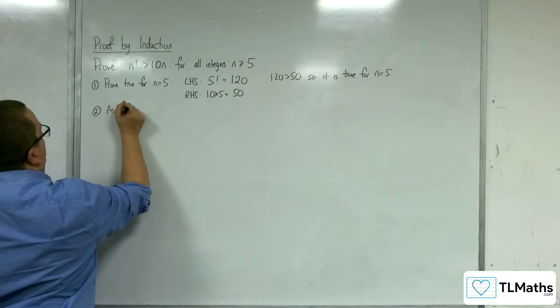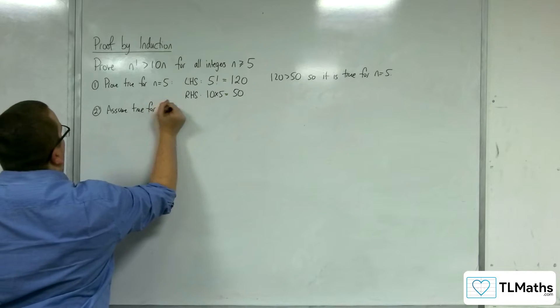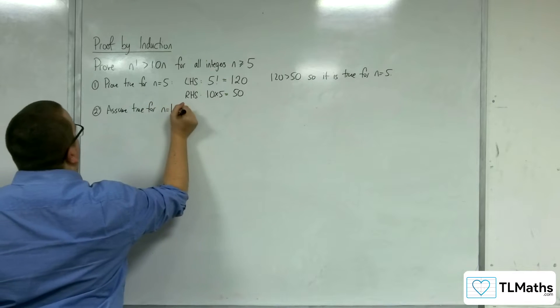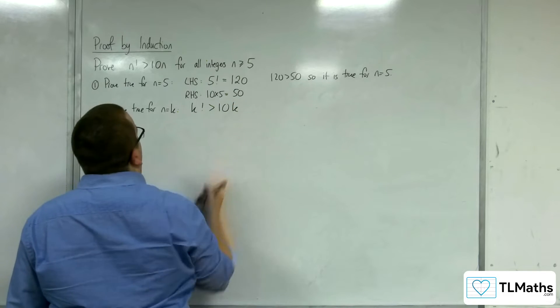Step 2. We want to assume true for n equals k. So, k factorial, we're going to assume is larger than 10k.